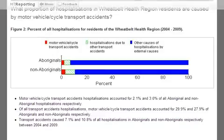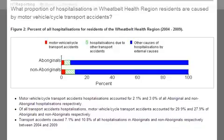To summarise, the data show that an injury prevention program would be best targeted at reducing motor vehicle and motorcycle accidents among non-Aboriginal males in the wheat belt. And that's the power of HealthTracks.